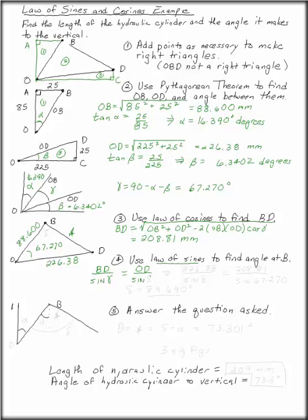We happen to know gamma, uh, delta rather. So what we're looking for here is this angle, delta. That will give us the angle to the vertical.